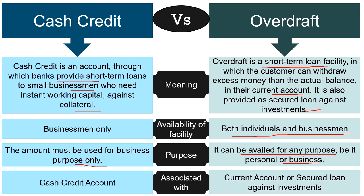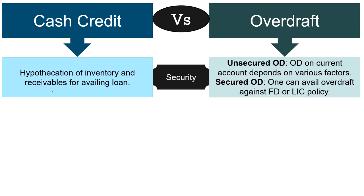Banks provide overdraft facility to current account holders, and it can also be provided to individuals against self-liquidating investments. In contrast, banks offer cash credit facility to business persons who open a cash credit account. Regarding security, for availing cash credit the business must provide inventory and receivables as security.